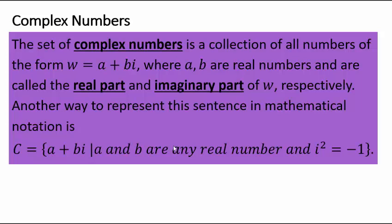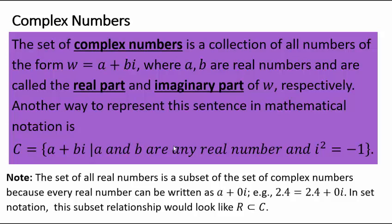Remember, i is √(-1). Our real numbers are part of complex numbers, because if you let b = 0, then a + 0i, where a is a real number, constitutes the entire real number set. So the set of real numbers are complex numbers with the imaginary part being 0.